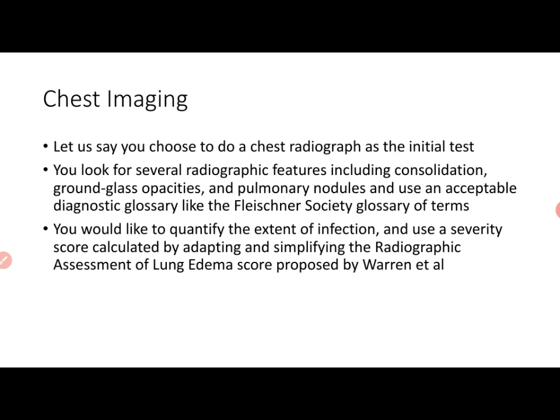You choose to do a chest radiograph as the initial test. The CT machine is new — still in the unboxed stage, a state-of-the-art machine meant to be looked at with admiration, not yet in the 'everyone can use it' stage. You look for several radiographic features including consolidation, ground-glass opacities, and pulmonary nodules, using an acceptable diagnostic glossary like the Fleischner Society Glossary of Terms.